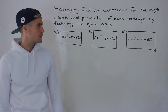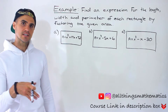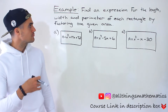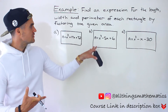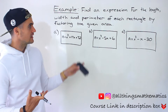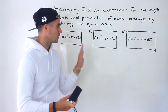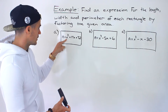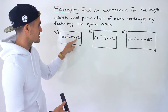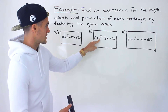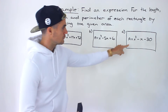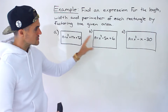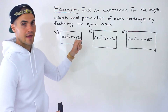Welcome back everyone, Patrick here. Moving on to the next question dealing with factoring. We have to find an expression for the length, width, and perimeter of each of these rectangles by factoring the given area. For all of these rectangles, we're given the expressions for the area: x squared plus 17x plus 72, x squared minus 5x plus 6, and x squared minus x minus 30. Given those areas, we have to find the length, width, and perimeter.